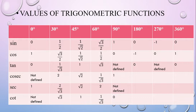Root 3 by 2. Cos 45 degree is 1 by root 2. Cos 60 degree is 1 by 2. Cos 90 is 0. These are sin, cos, tan, cosec, sec, and cot.